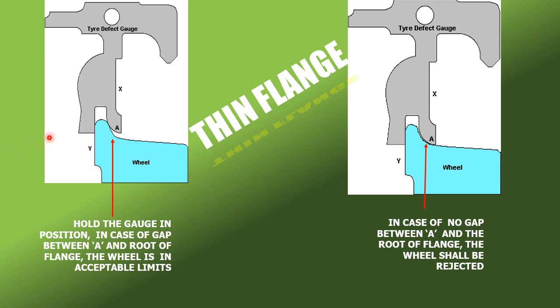This shows how to check the thickness of the flange by holding the gauge in this fashion. In case of a gap between point A and the root of the flange, the wheel lies within acceptable limit. But if point A touches the root, then the wheel is rejectable.